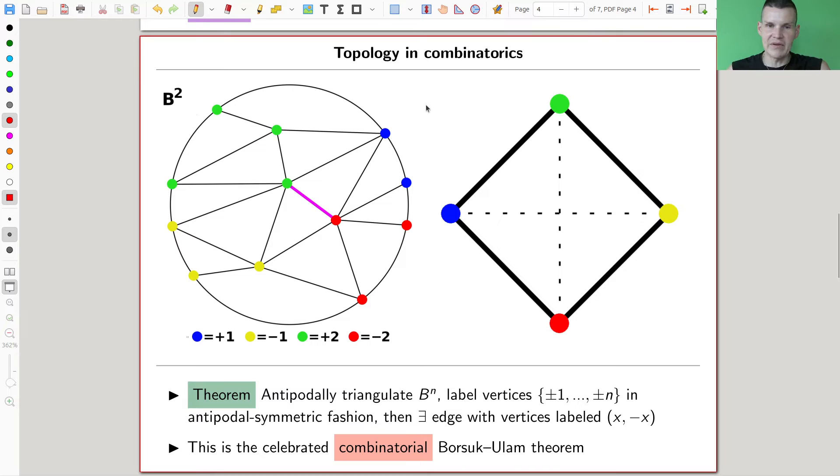Topology in combinatorics, the other way around, let's say you take a sphere. So here's a very boring illustration of S1. Here's an illustration of S1, which is just the boundary of B2. And let's say, so you antipodally triangulate B2. It just means you fix some points here on the boundary. And whenever you include a point, you include its antipod. So here's a point, and here's its antipod. And you color them with plus or minus one, plus or minus two, plus or minus three, whatever.